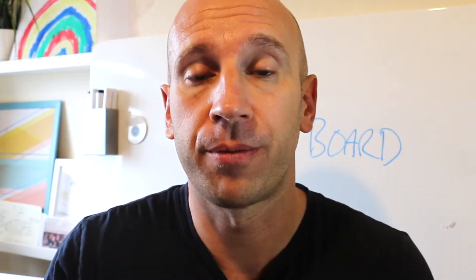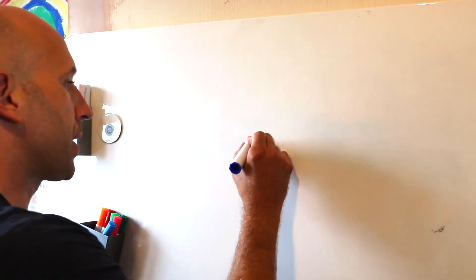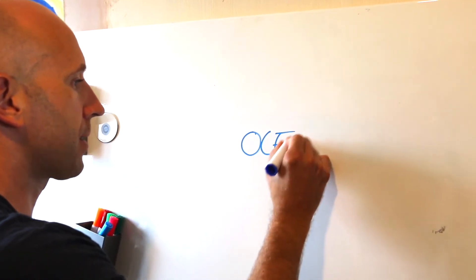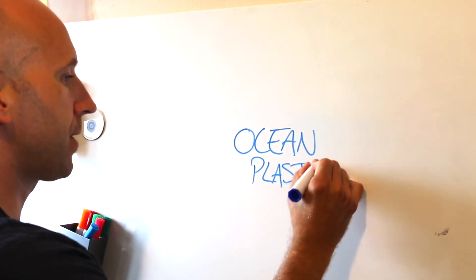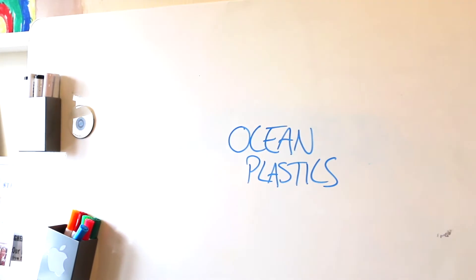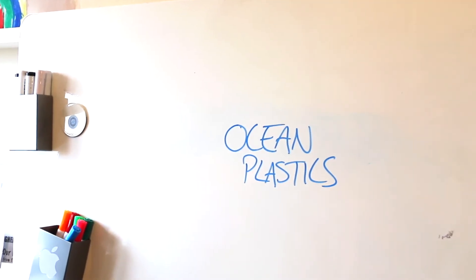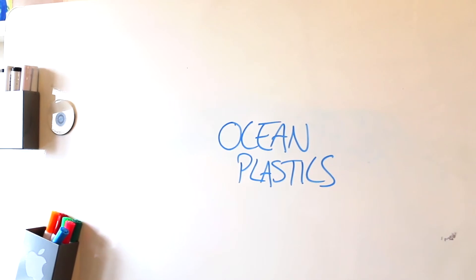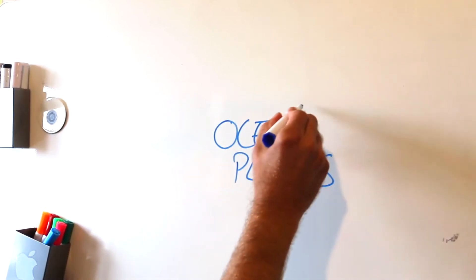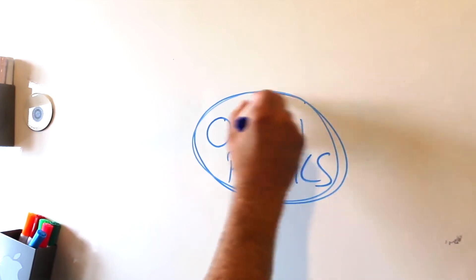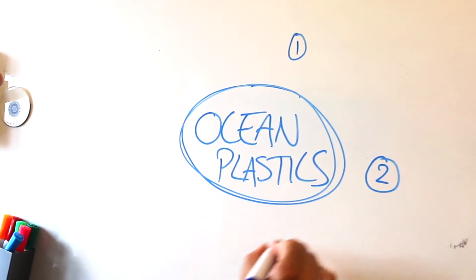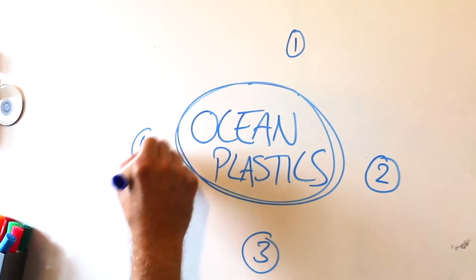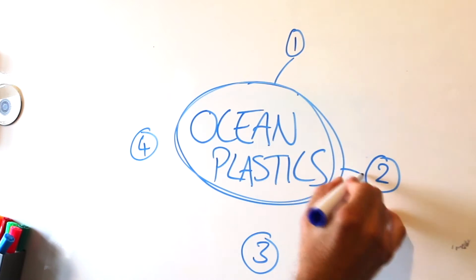I'm going to show you how I do that with this simple whiteboard. Let's imagine we're building a Prezi that looks at the ocean plastic problem. Our presentation is going to deliver lots of information about what we can do about this problem and how to help. There are going to be four key areas — this is our main subject and we are going to have one, two, three, four key areas.